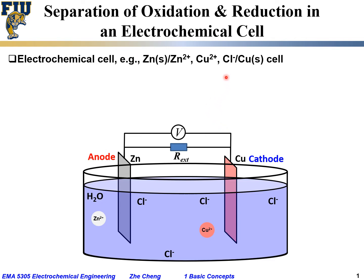So let's look at such an electrochemical cell. Between the two metal electrodes, we can have an external circuit. Of course, under open circuit condition, this resistance for the external circuit goes essentially towards infinity. And if you want, you can add a voltmeter to measure the potential difference between the two metal electrodes.